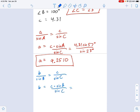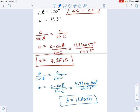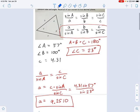So what does that turn out to? It's going to be 4.31 times the sine of 100 degrees divided by the sine of 23 degrees. From that we get little b equals 11.8630. And there we go. Problem is solved.